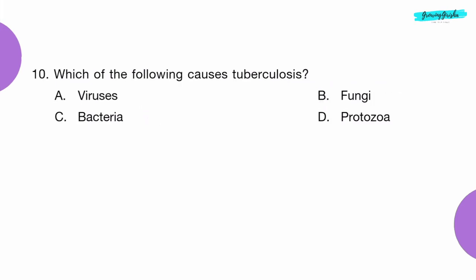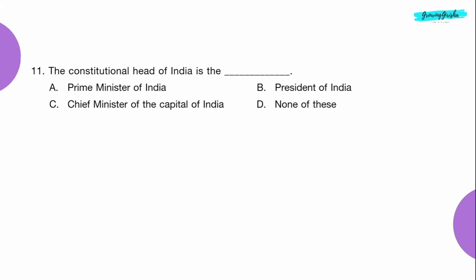Question 10: Which of the following causes tuberculosis? Option C: Bacteria. Question 11: The constitutional head of India is the dash. Option B: President of India.